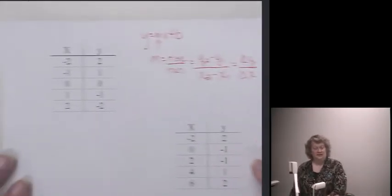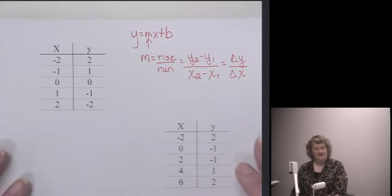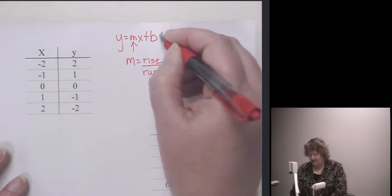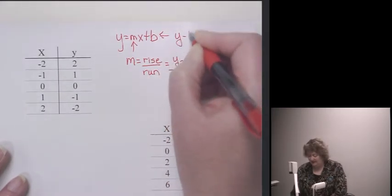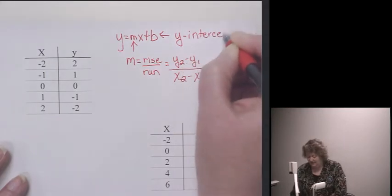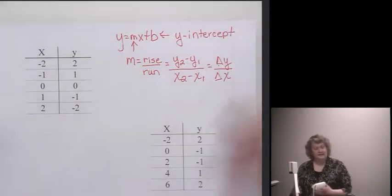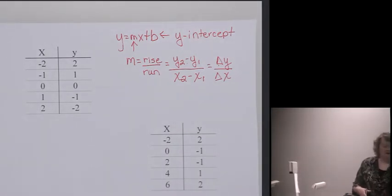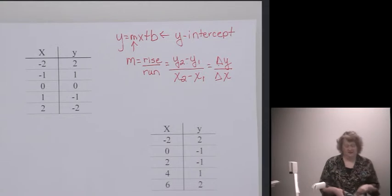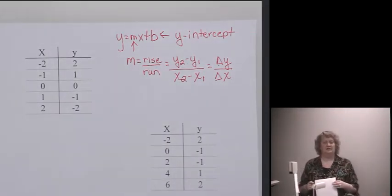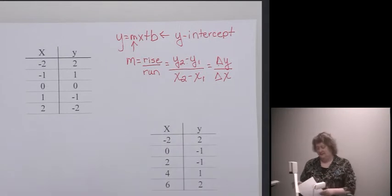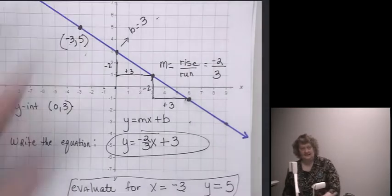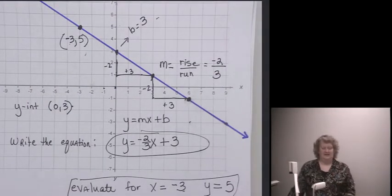Now, one of the things we do when we're given a table is we have to find the two pieces of information. And I said what m was, but I forgot to write down that our b is the y-intercept. Now, graphically, it's real easy to see the y-intercept. It's where it crosses the y-axis. It's the y-intercept, so it's where it crosses the y-axis. And it's very easy to spot that.